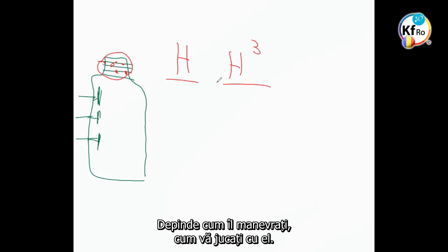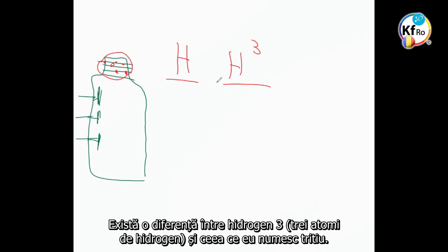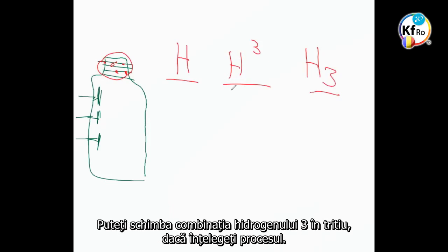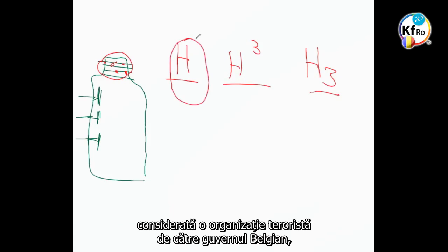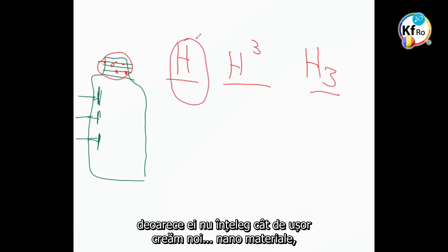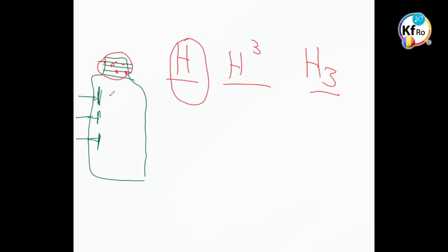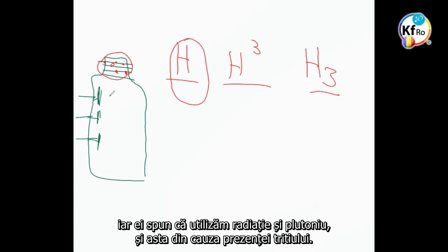It depends how you handle, how you play. There is a difference between Hydrogen-3 atoms of Hydrogen and what I call Tritium. You can change combination of Hydrogen-3 into Tritium if you understand the process. One of the reasons Keshe Foundation was made a terrorist organization by the Belgium government is because they could not understand how easily we were creating nano-materials. They said using radiation and using Plutonium is because of the presence of Tritium.